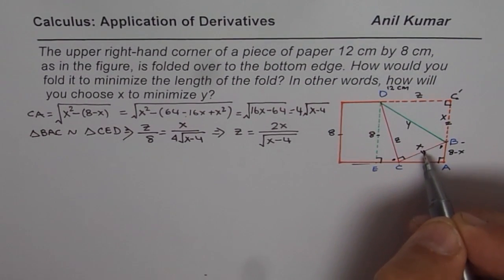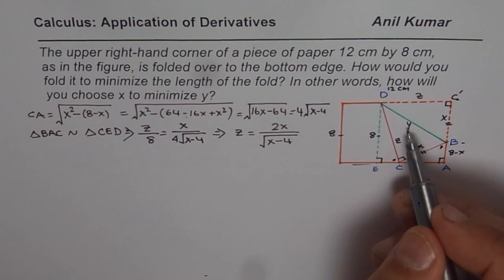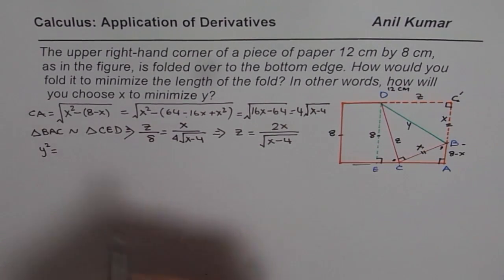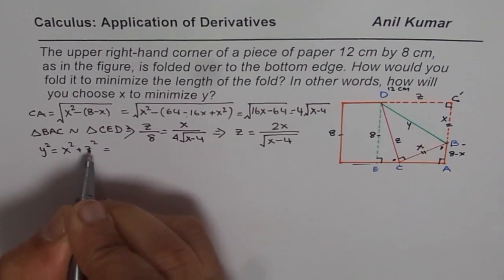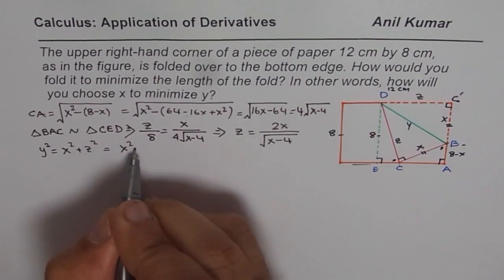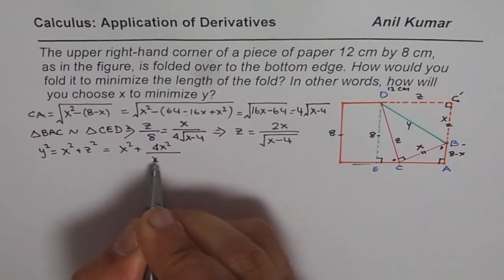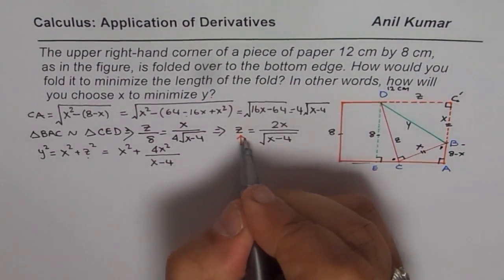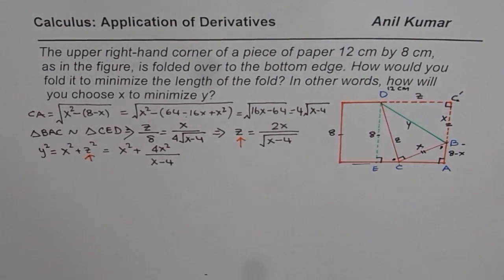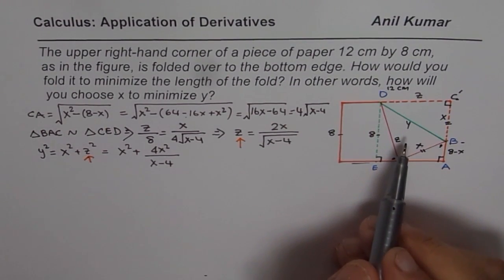Now we know what Z is and we know what X is, so we can find Y. Triangle DCB is a right triangle, where Y squared equals Z squared plus X squared. We know what Z is in terms of X — Z is 2X over √(X minus 4), so Z squared is 4X squared divided by (X minus 4). So Y squared equals X squared plus 4X squared over (X minus 4). The idea is to minimize Y.